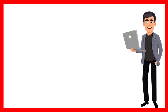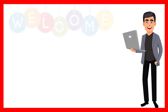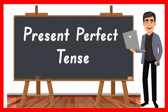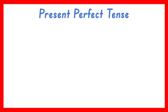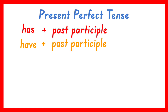Hello everyone! Welcome to Bahay Aralan. For this video, we will be talking about the present perfect tense of verbs. The present perfect tense is formed by using the helping verb has or have plus the past participle form of the verb.